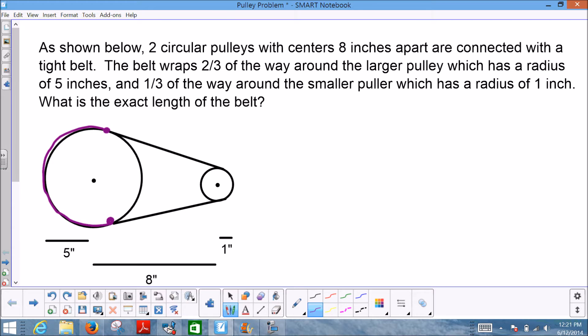The larger circle I'm going to denote here in purple and describe as the belt that wraps 2/3 of the way around the 5-inch pulley.